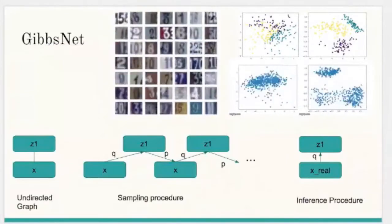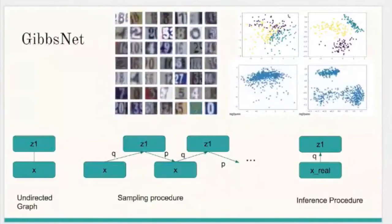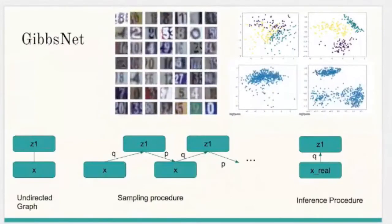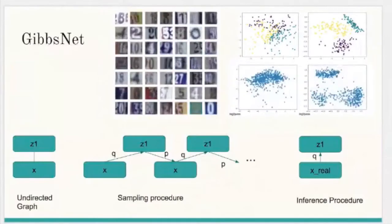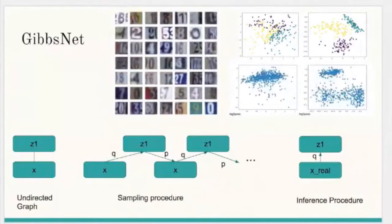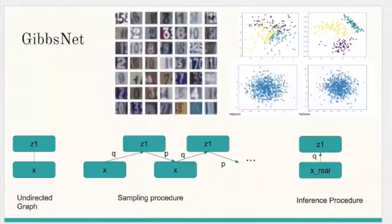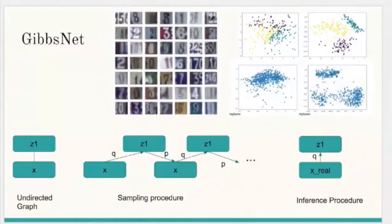We show empirically that GibbsNet is able to learn a more complex P(Z) and that this leads to improved inpainting and iterative refinement of P(X,Z) for dozens of steps and stable generation without collapse for thousands of steps, despite being trained on only a few steps.